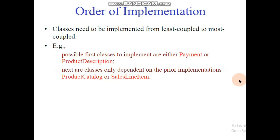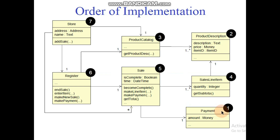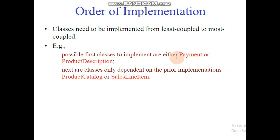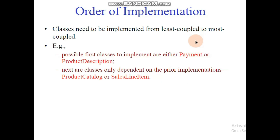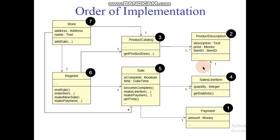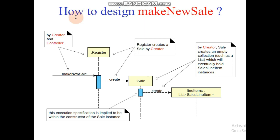In the diagram, first we implement Payment and ProductDescription. Third is ProductCatalog, fourth is SalesLineItem, and the remaining classes depend on the prior implementation in sequence — the fifth depends on the fourth, the sixth on the fifth, and the seventh on the sixth. This is how the order of implementation is determined.